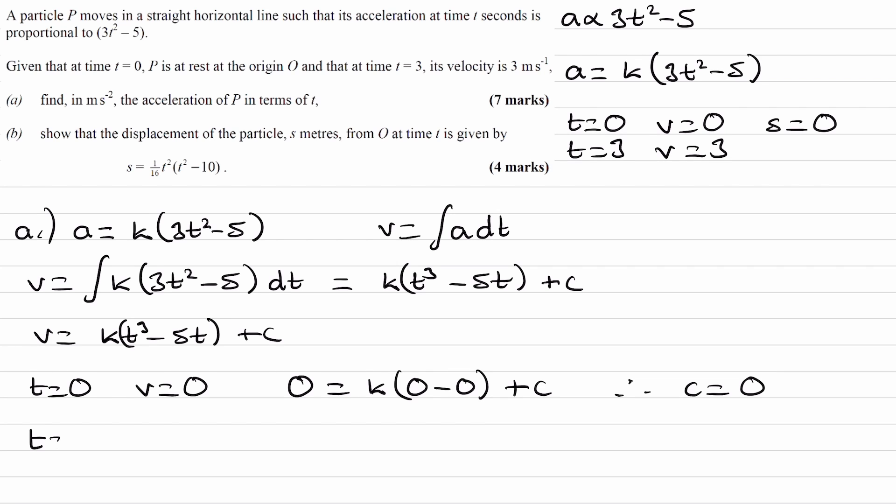Similarly, we can put in t is equal to 3, v is equal to 3. 3 is equal to k times 3 cubed, which is 27, minus 5 times 3, minus 15. And this is the same thing as 3 is equal to 12k, and then we end up with k is equal to 1 over 4.